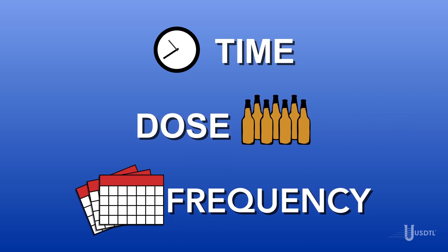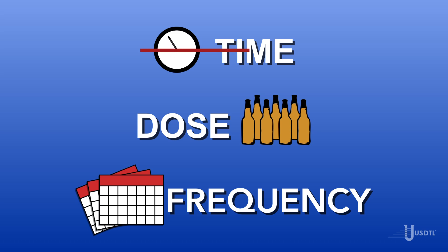No matter how the questions are phrased, we can only say: when testing a reservoir matrix, the reported quantitation of a drug or its metabolite cannot be used to determine when or if a specific substance was used, how much of a substance was used, or how often a substance was used.